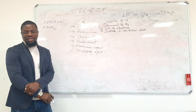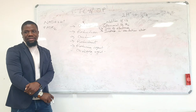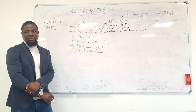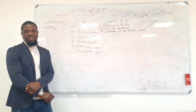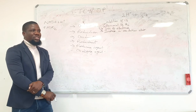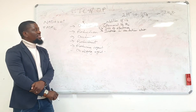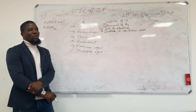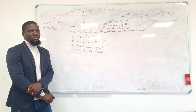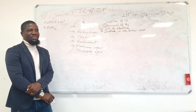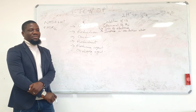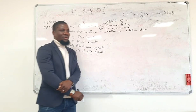An oxidant is a substance — a species which undergoes oxidation — or more precisely, a species that removes electrons from another substance, making it an oxidizing agent.